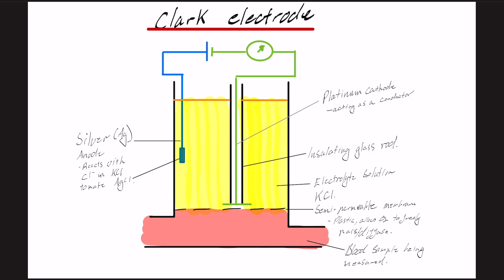And then at the top, we've got our external power source, which is about 0.6 volts of applied energy. And then in green here, this is our galvanometer, which measures current.